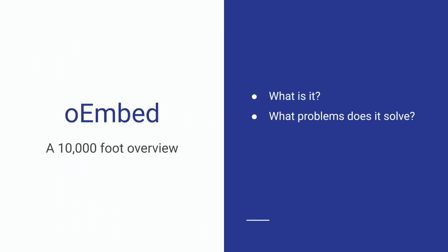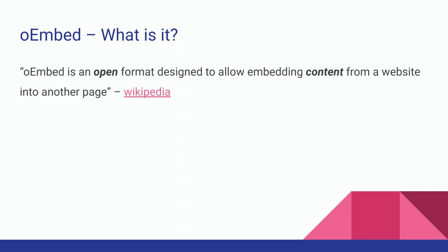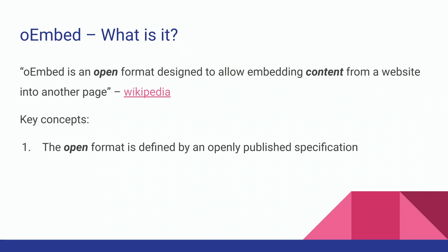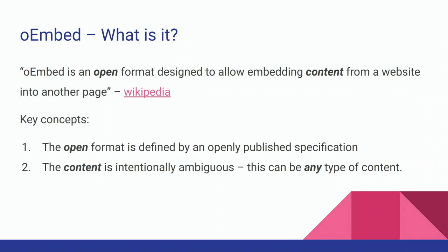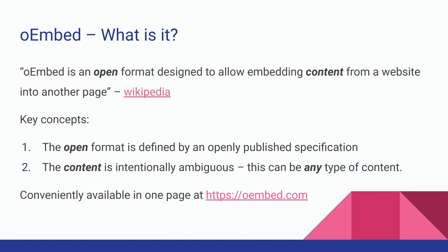So oEmbed itself — I'm going to discuss what it is, the problems that it solves, get into how it works, and we can't talk about oEmbed without at least one slide on security. What oEmbed is, quoted straight from Wikipedia: it is an open format designed to allow for embedding content from one's website into another page. Two things stood out: one, it's an open format, freely available to anybody. And the word 'content' is fairly ambiguous — a lot of people think oEmbed means video, but in reality it could be a video, an image, a pile of HTML, really anything. That's intended by the spec. You can find the spec on oEmbed.com — it's all on one page, read it in 10 minutes.